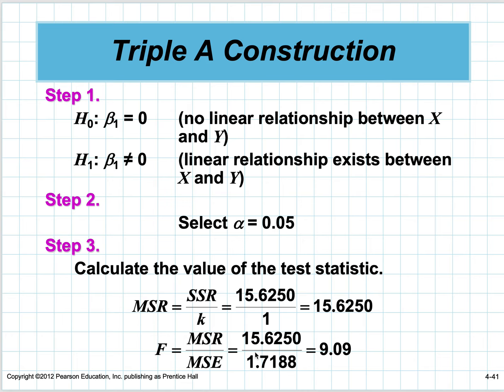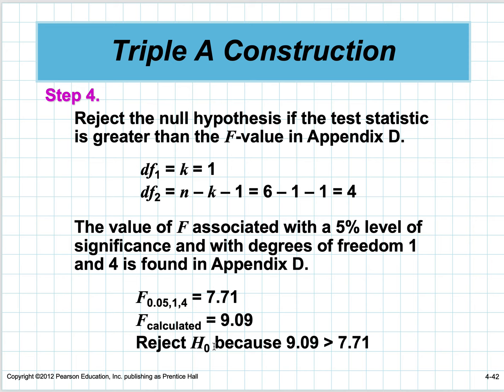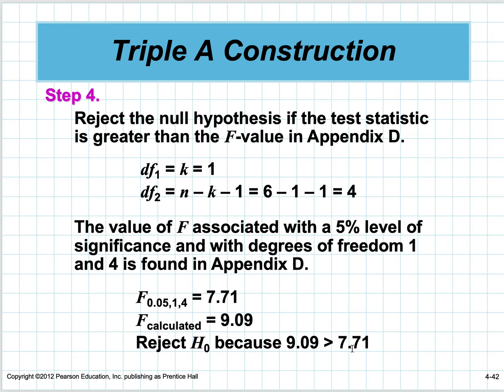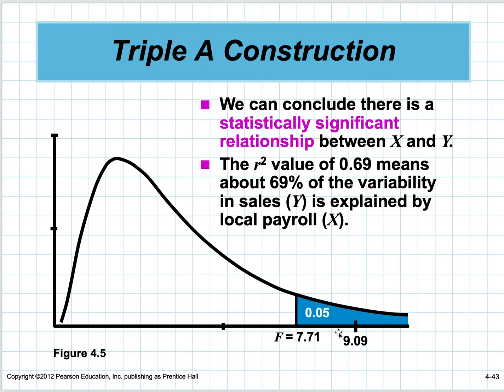We calculate all this—the computer does it for us. We reject the null hypothesis because the F-statistic 9.09 was significant. Using the p-value method: the p-value says where our calculated point falls. If we end up in the 5% tail of this F-distribution, we assume it's a rare event, this distribution is not true, and we reject the null hypothesis. We can conclude there is a statistically significant relationship between X and Y.